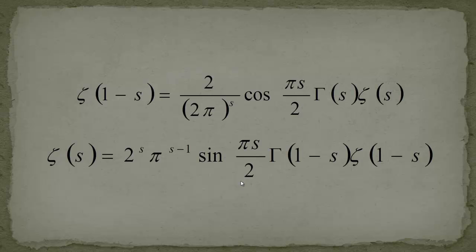The critical line 1/2 + i·t is hidden somewhere in these equations, and we will see that more clearly in the later videos. As always, if you have questions or comments, please use the YouTube comments function. If you like this video, please give a thumbs up — I hope to see you soon in a new video. Thank you!